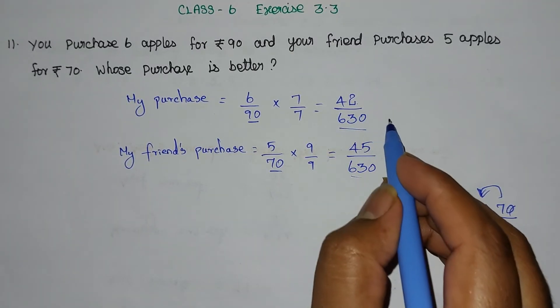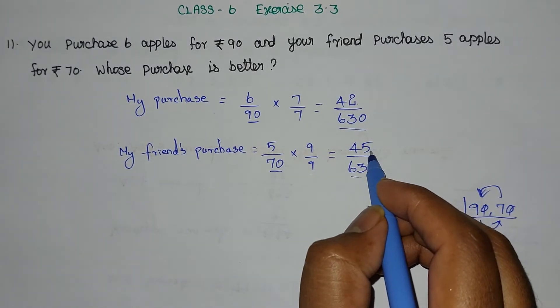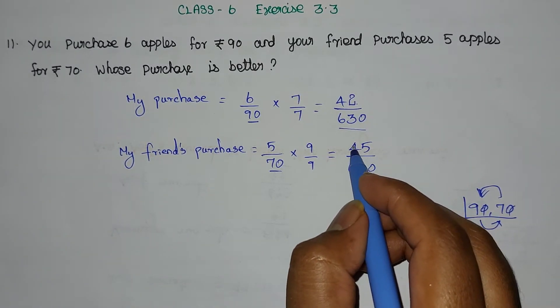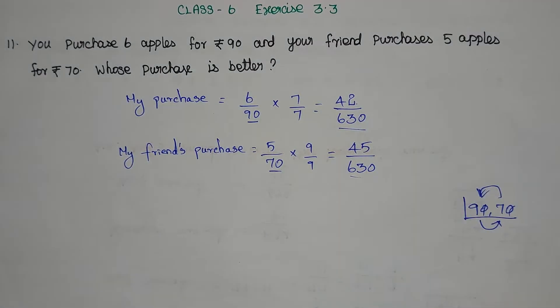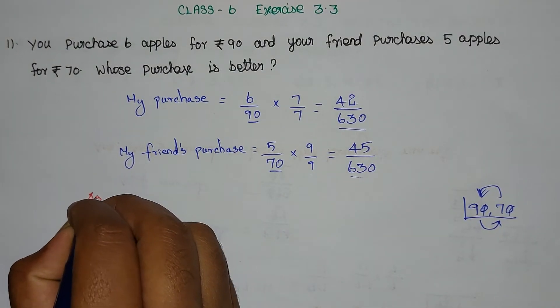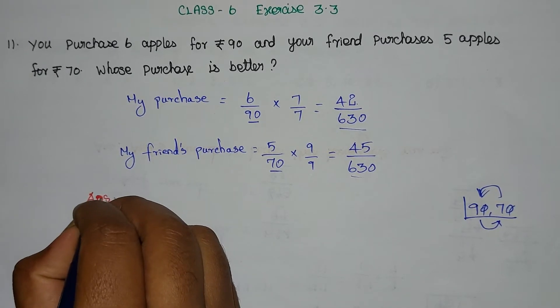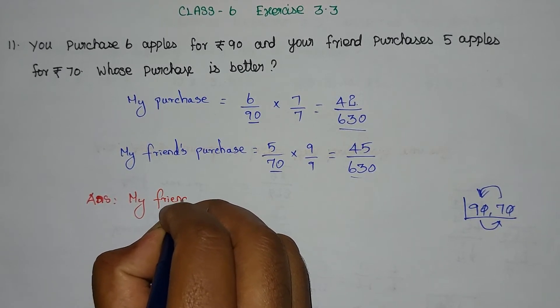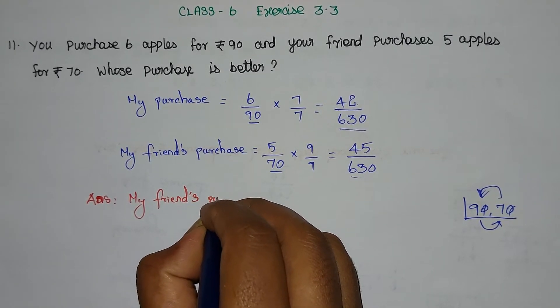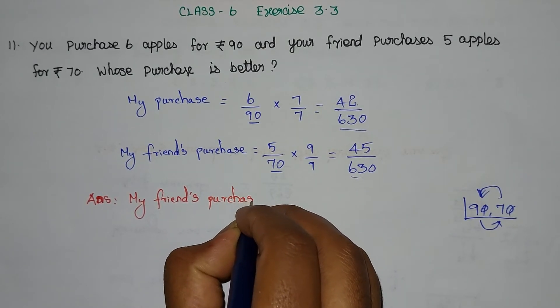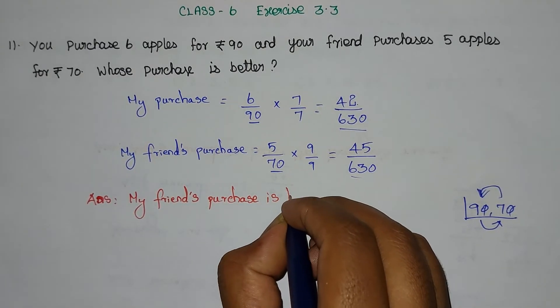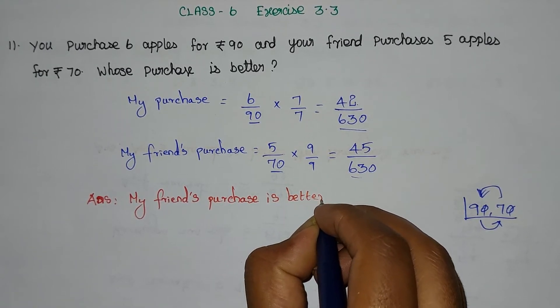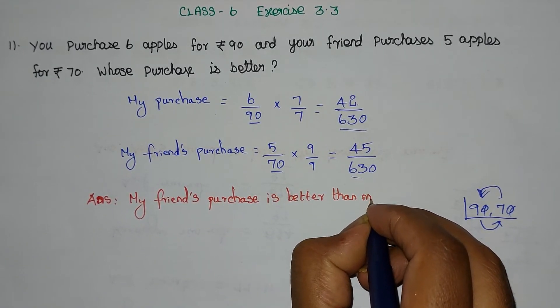The denominators are the same, 63. The numerators are 42 and 45. Since 45 is the bigger number, the answer is my friend's purchase is better than me.